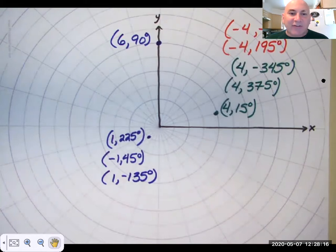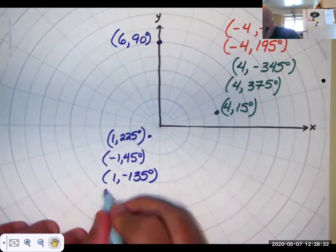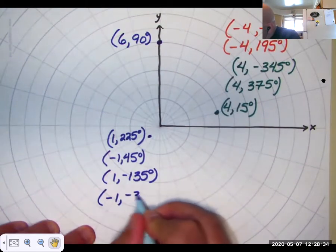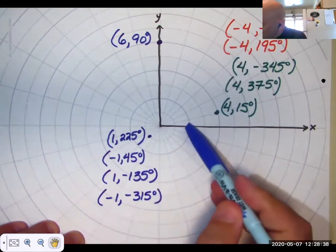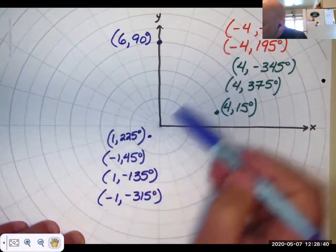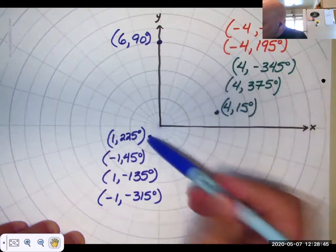And lastly, do a negative r and a negative theta. I would do negative 1, negative 315 degrees. And the reason is negative 315 degrees would get me over here on the 45 degrees side. And then I go negative 1 in that direction.